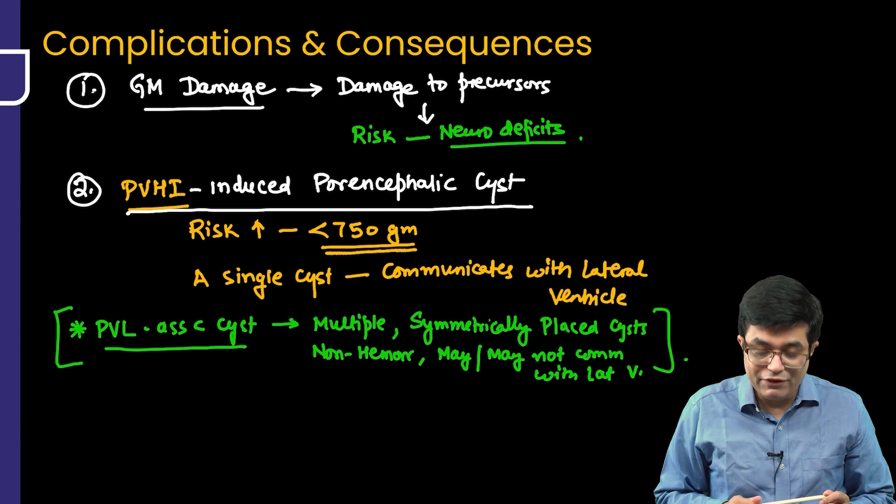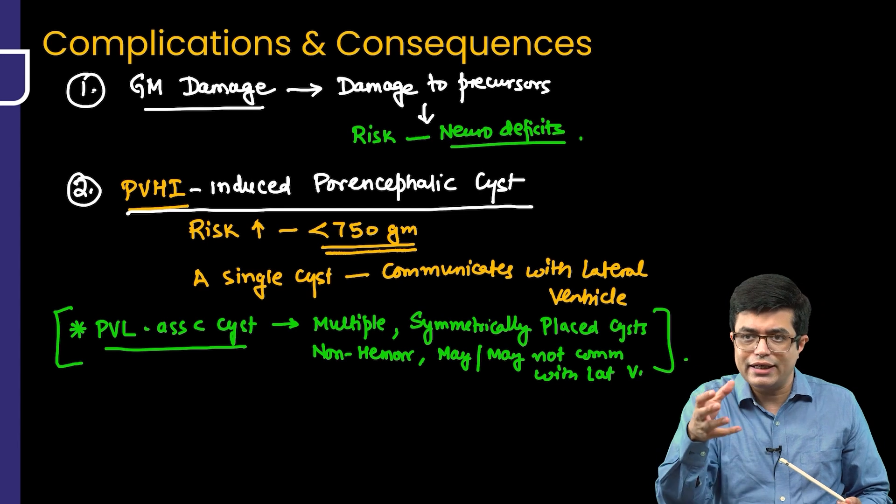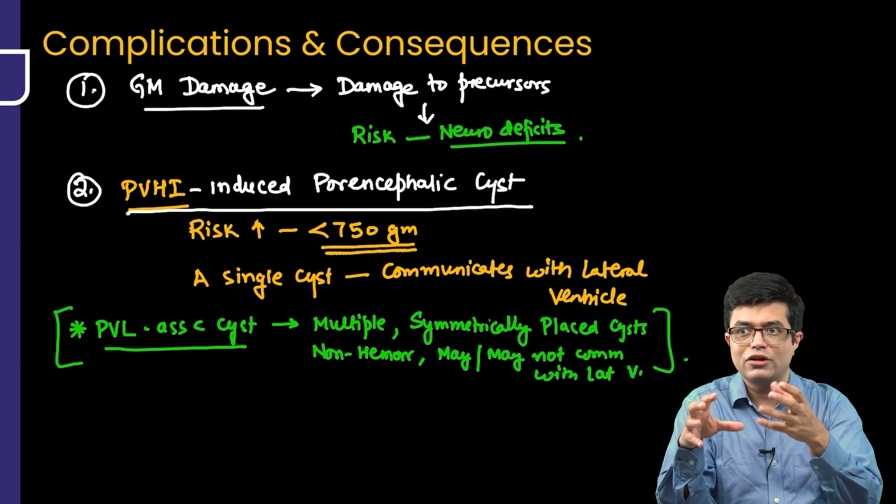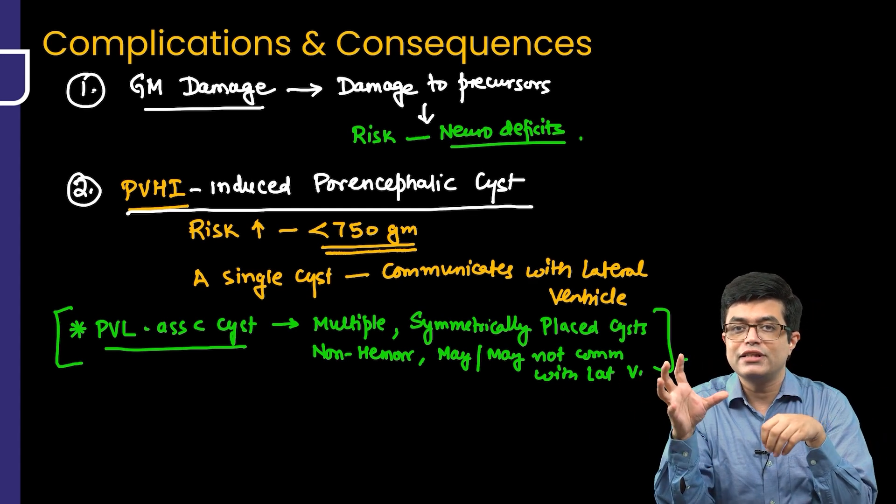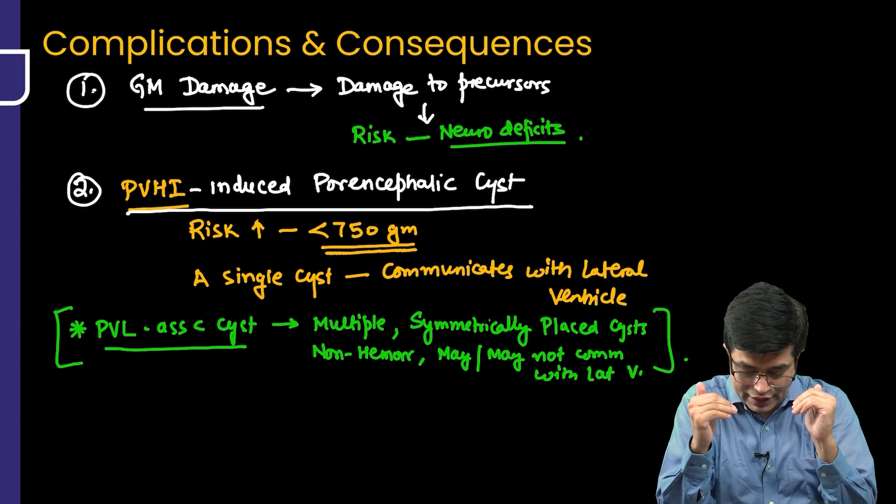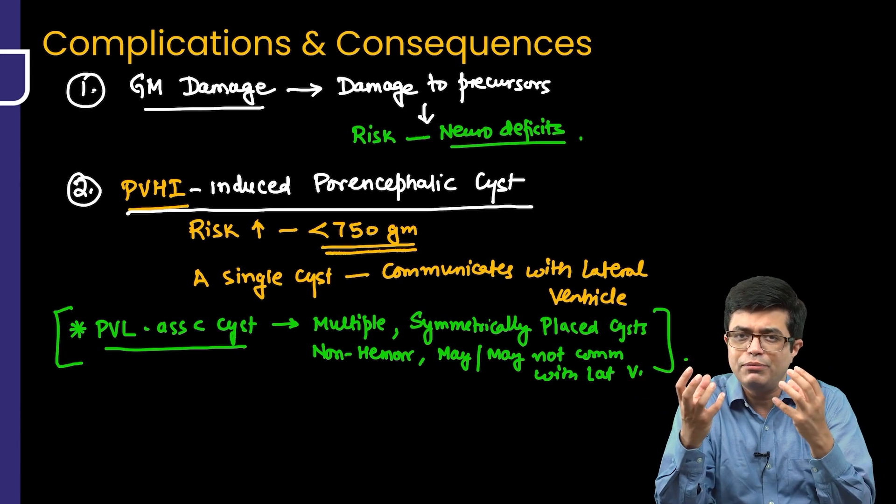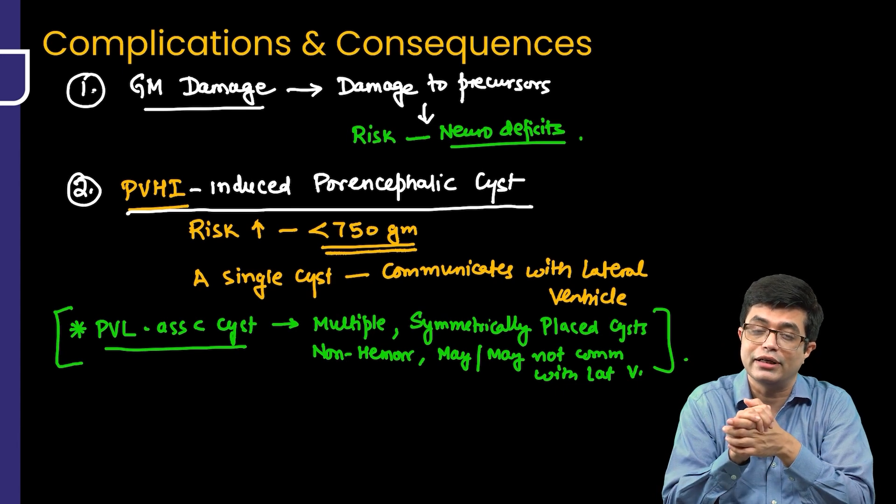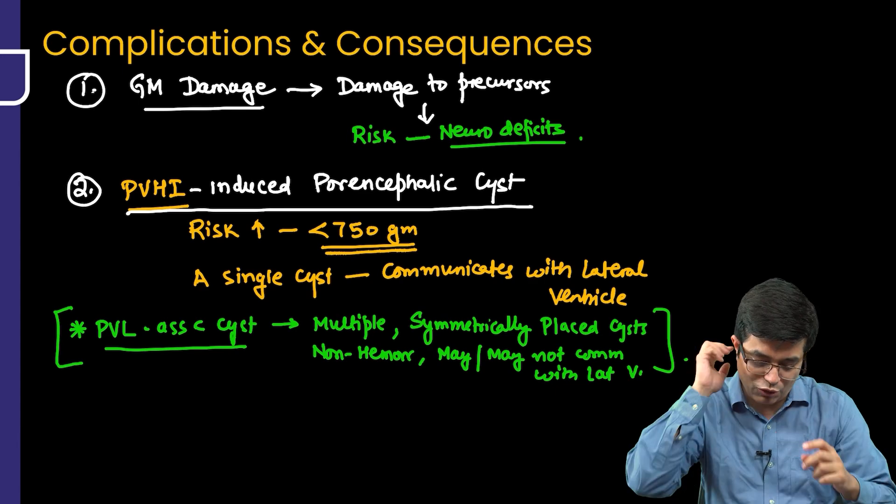Can multiple cysts be seen in PVHI? Very rarely, yes. Review articles say that yes, it can be. But even if they are, suppose there are two cysts, one on one side and one on the other side, one of the cysts will always be larger compared to the other, so symmetry will not be seen. Whereas in case of PVL, it will be multiple cysts and the size usually will be of the same size, because PVL itself is always a bilaterally symmetrical thing. And they will always be non-hemorrhagic in patients of PVL.